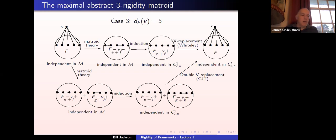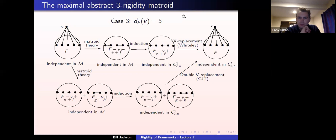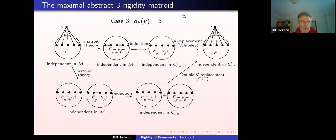A follow-up: one of the equivalent characterizations of an abstract rigidity matroid is that K_{d+1} is independent and zero extensions preserve independence. If you arbitrarily declare some additional graphs independent and zero extensions preserve independence, does that give a matroid? It depends on what set of graphs you take — you can't just arbitrarily declare a set of graphs independent. If you said K_{d+2} is independent, that would imply K_{d+1} is independent, so it would give you an abstract d-plus-one-rigidity matroid.